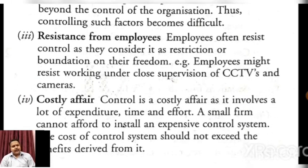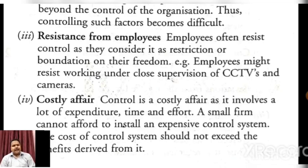The third one is resistance from employees. Employees often resist control as they consider it a restriction or imposition on their freedom. For example, employees might resist working under close supervision of CCTVs and cameras. Generally जब हम controlling establish करते हैं organization में, तो controlling का मतलब होता है कि आप सही direction में चलें अपने goal को achieve करने की दिशा में।